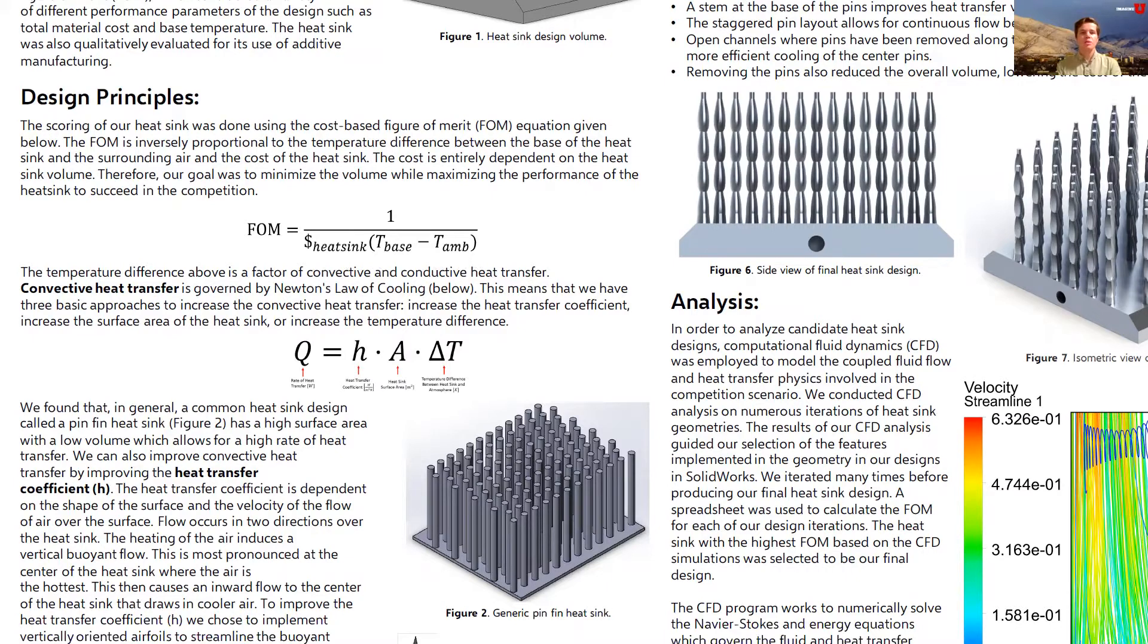The heatsink has two modes of heat transfer: conduction and convection. Convection is governed by Newton's Law of Cooling, which is displayed on our poster. This gives us three ways to maximize the heat transfer. We can increase the heat transfer coefficient, increase the surface area of the heatsink, or increase the temperature difference between the heatsink and the atmosphere.